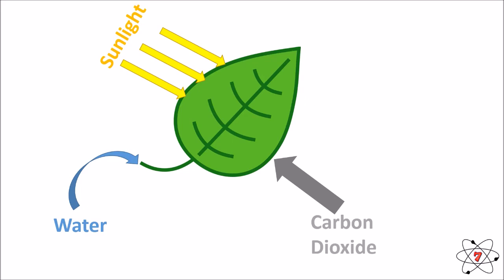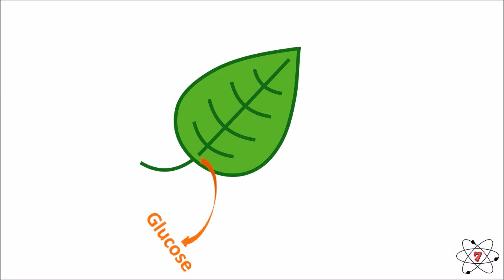Sunlight hits the leaf and provides the energy required for photosynthesis. So water, carbon dioxide, and sunlight are all needed for photosynthesis to take place. Glucose is a sugar that is produced in photosynthesis — the sunlight provides energy which allows carbon dioxide and water to combine to form glucose.